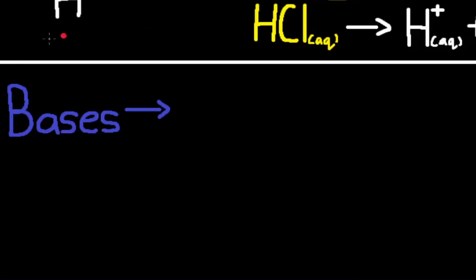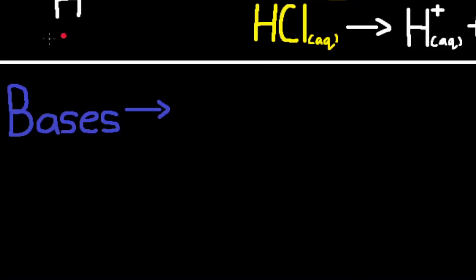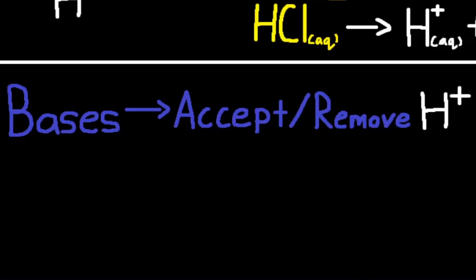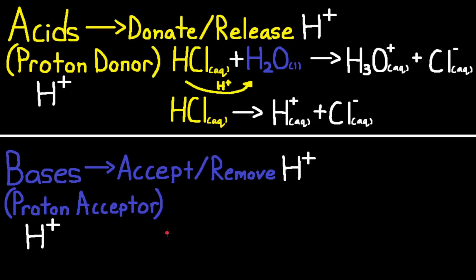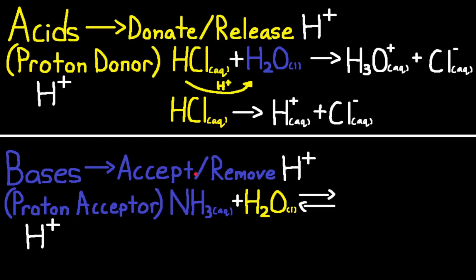On the other hand, bases accept or remove H⁺ ions. So in a reaction, bases are considered proton acceptors where H⁺ is the proton. For example, NH3 is a base, and since bases accept H⁺, NH3 will take an H⁺ ion from H2O, producing NH4⁺ and OH⁻.